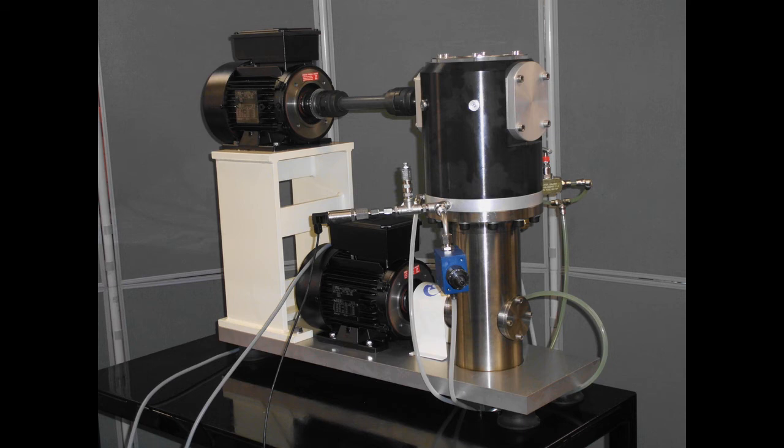For partial journal and rolling element bearings, tests can be run immersed with lubricant circulation. For full journal bearings, a rotating manifold can be attached to the free end of the bearing shaft to provide a central oil feed.